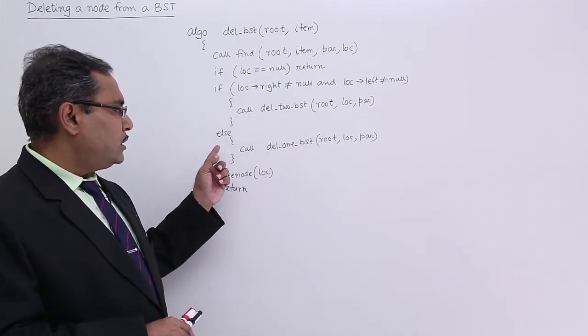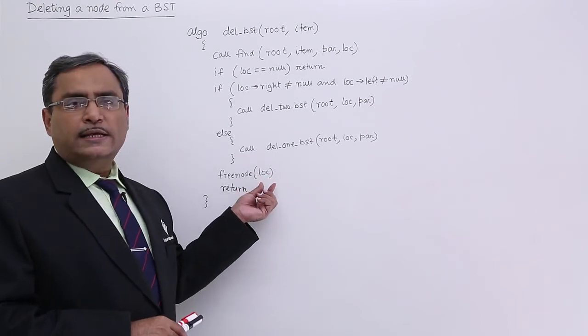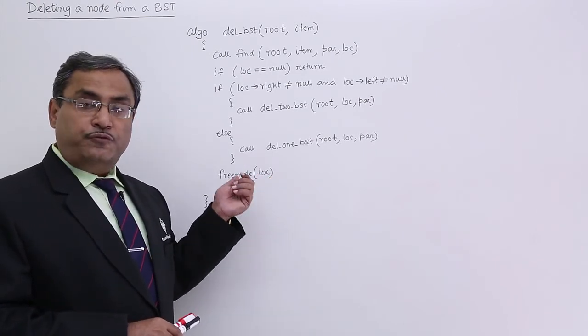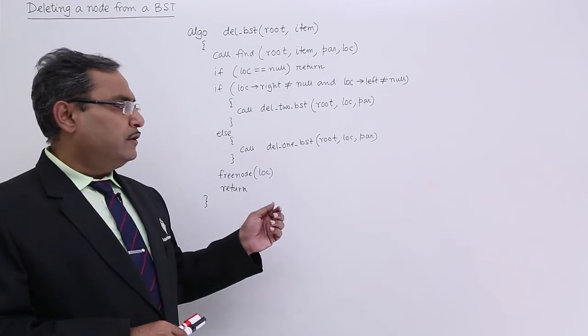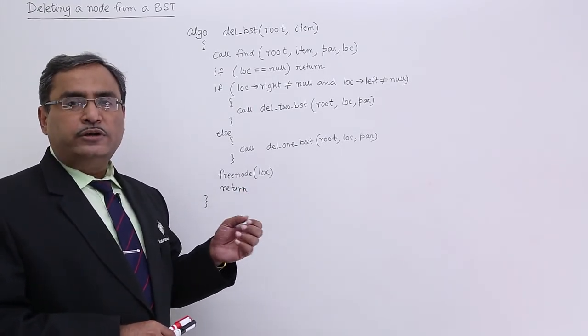After doing this deletion operation I am calling this free node passing this one as input parameter lock. Free node will release the memory space reserved for this lock because the lock the node lock has got deleted.